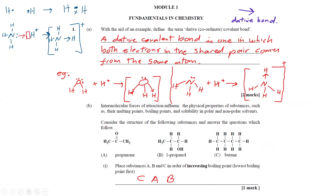1a: with the aid of an example, define the term dative covalent bond — same thing as coordinate bond. A dative covalent bond is one in which both electrons in the shared pair come from the same atom. We normally denote the dative bond with an arrow.